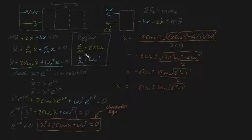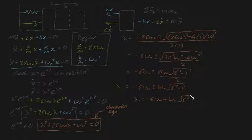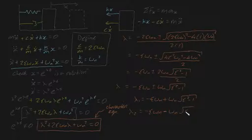Now you may have guessed that this means there are two values of lambda. Lambda 1 is minus zeta omega_n plus omega_n times the square root of zeta squared minus 1, and the other root, lambda 2, is minus zeta omega_n minus omega_n times the square root of zeta squared minus 1.